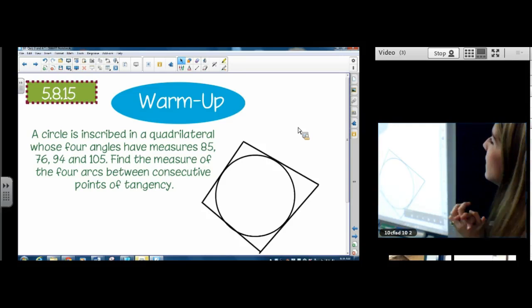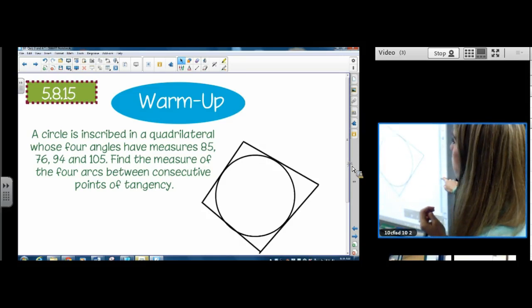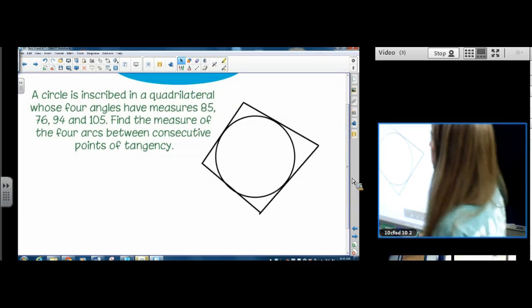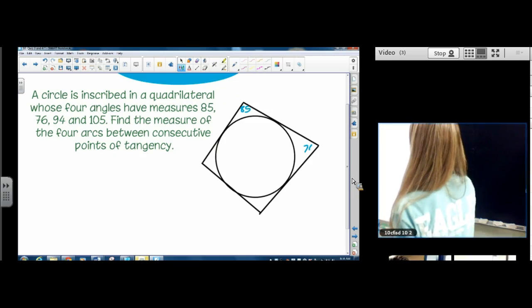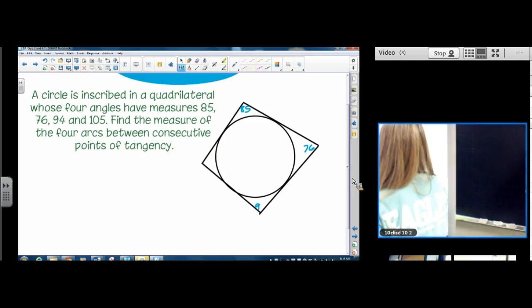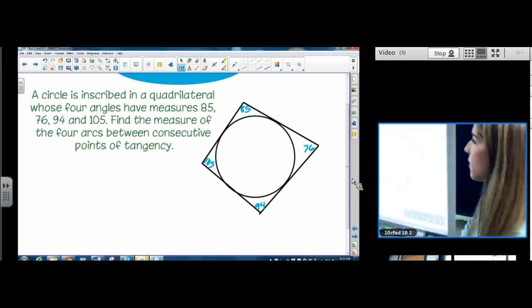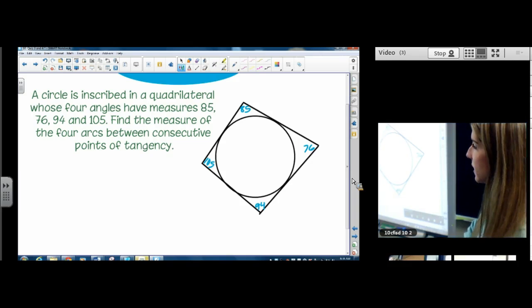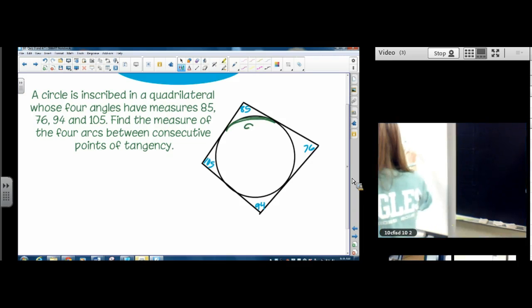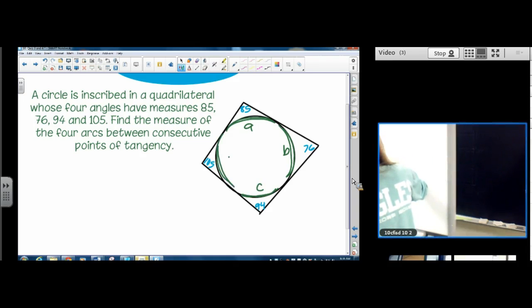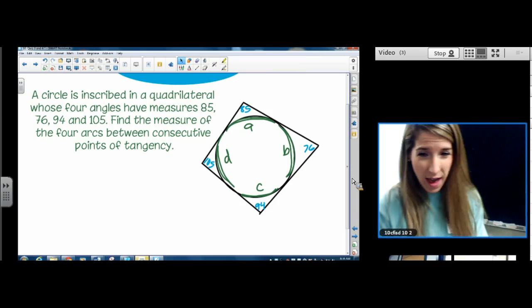Happy Friday! A circle is inscribed in a quadrilateral whose four angles have measures 85, 76, 94, and 105. Find the measure of the four arcs between the consecutive points of tangency. So it wants us to find the measure of, I'll call them A, B, C, and arc D. Go ahead and think about that if you haven't already.